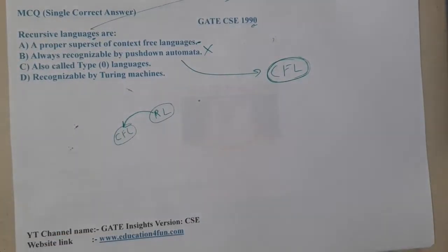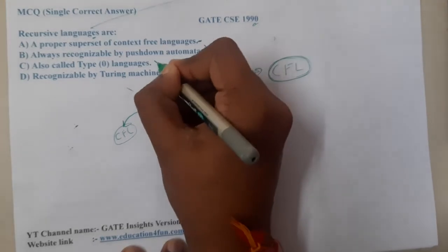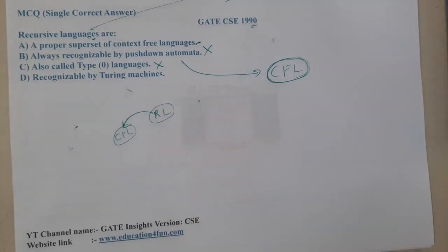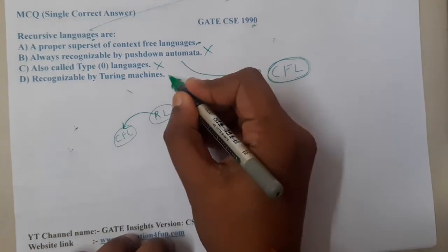Option C says that recursive languages are also called as Type 0 grammar. To be clear, recursive enumerable languages are called as Type 0. Let us recall: recursive enumerable are Type 0, which means recursive languages are not Type 0. When it comes to this, so option D is 100% correct.